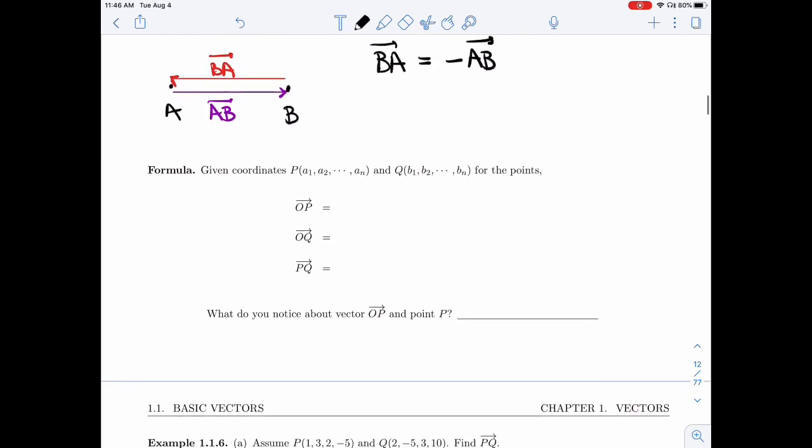To make this easier, I'm going to give you a formula for all of these vectors. So let's say I have the coordinates of the point. So P is going to have a_1, a_2, a_n. Q is going to have b_1, b_2, b_n.